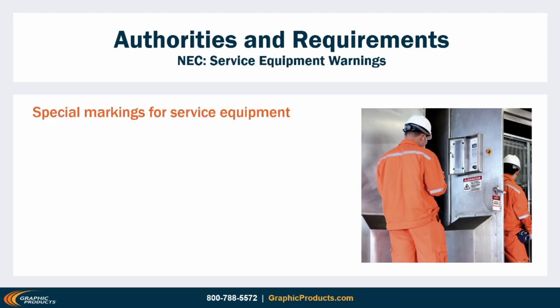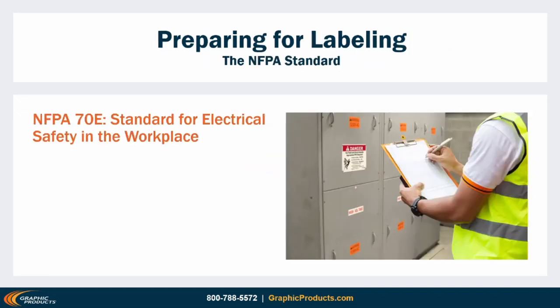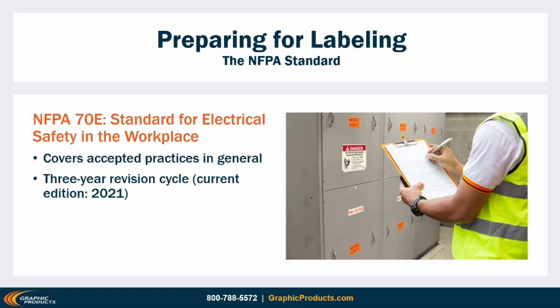Requirement B only covers service equipment rated for 1200 amps or more, and requires more specific details. These signs need to identify nominal system voltage, available fault current at the protective device, clearing time for that device based on that current, and the date of the label. However, this label is not required at all if the equipment has a dedicated arc flash label that follows accepted industry practice. You can find these accepted practices in NFPA 70E, which describes accepted practices for workplace electrical safety based on expert opinions and industry consensus, updated every three years, most recently for 2021.